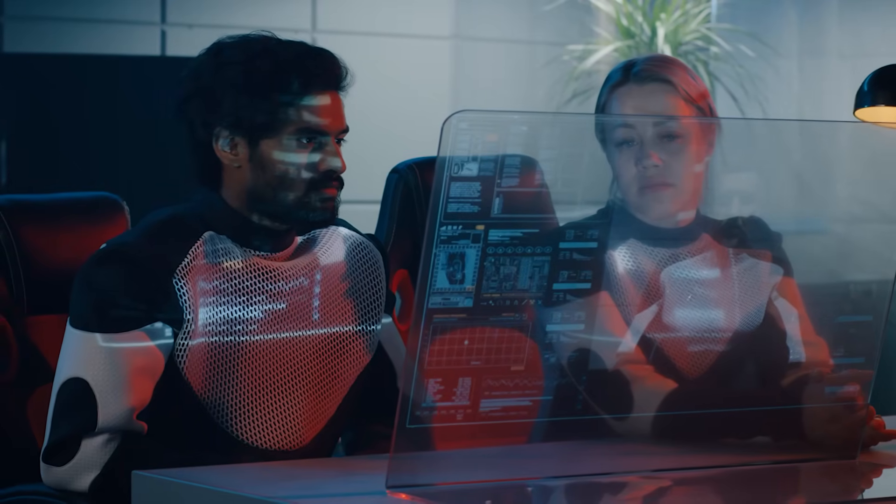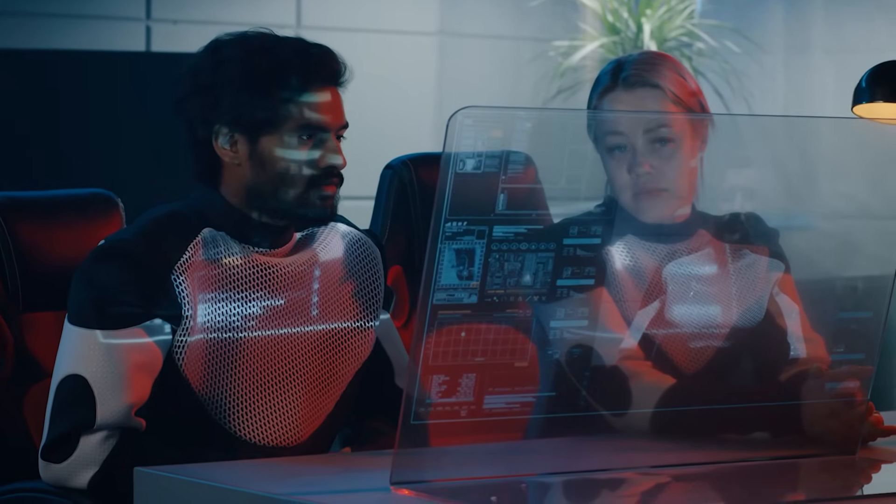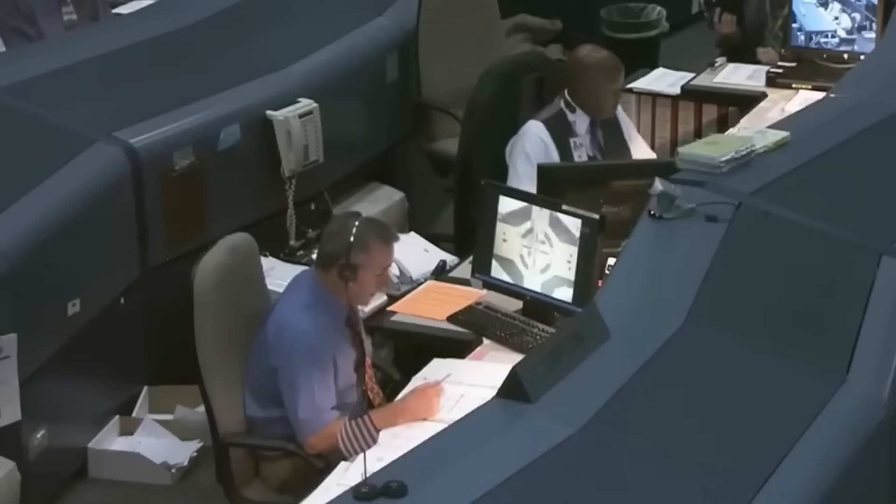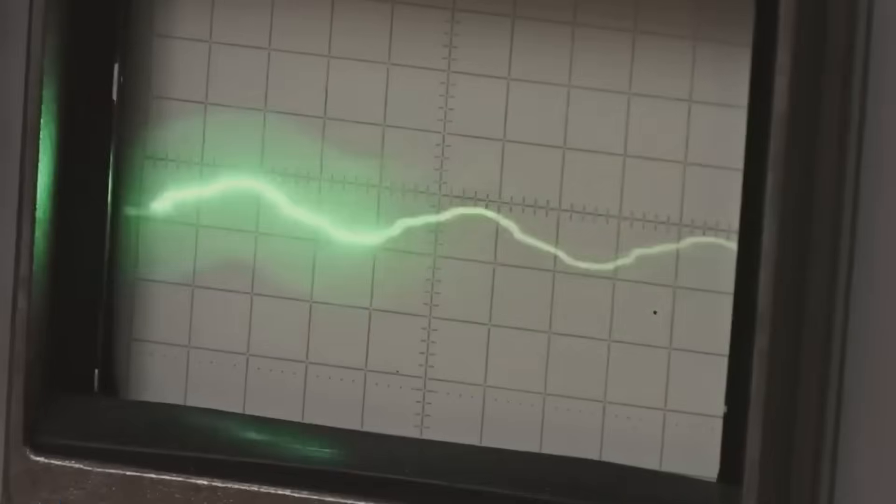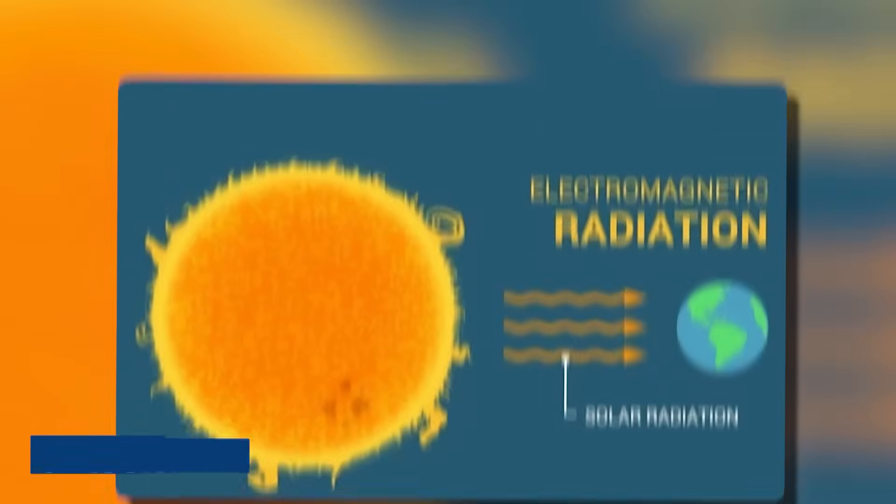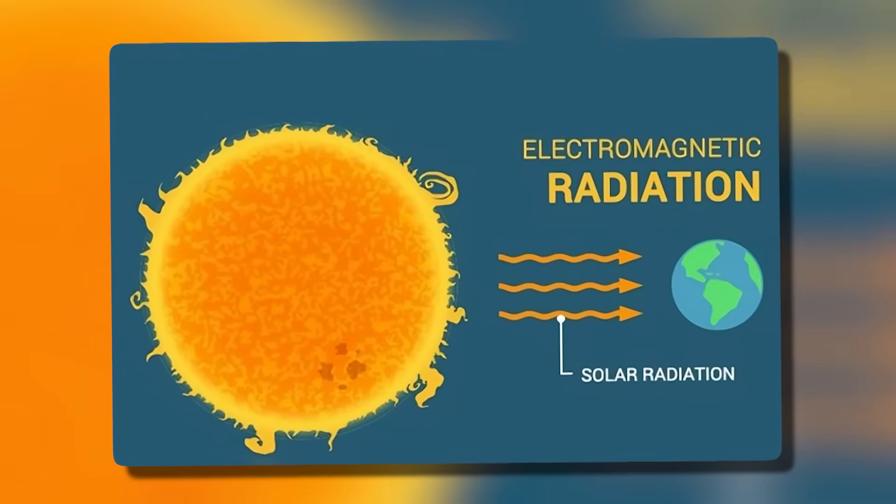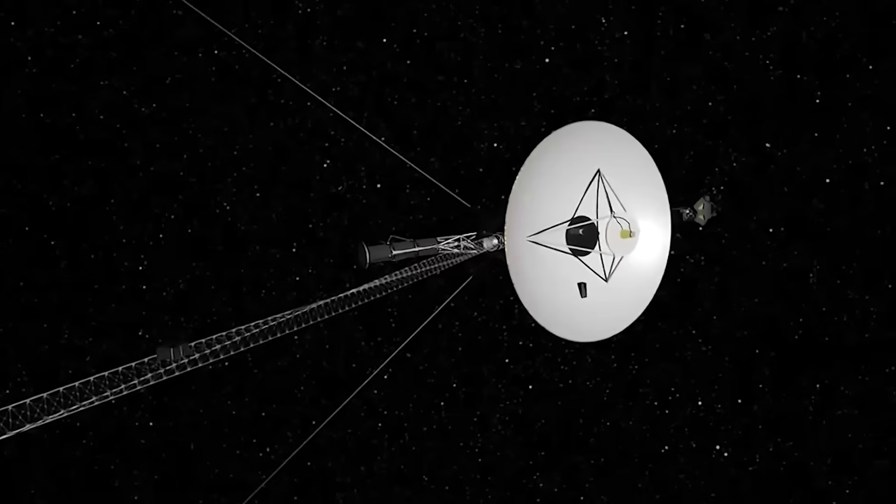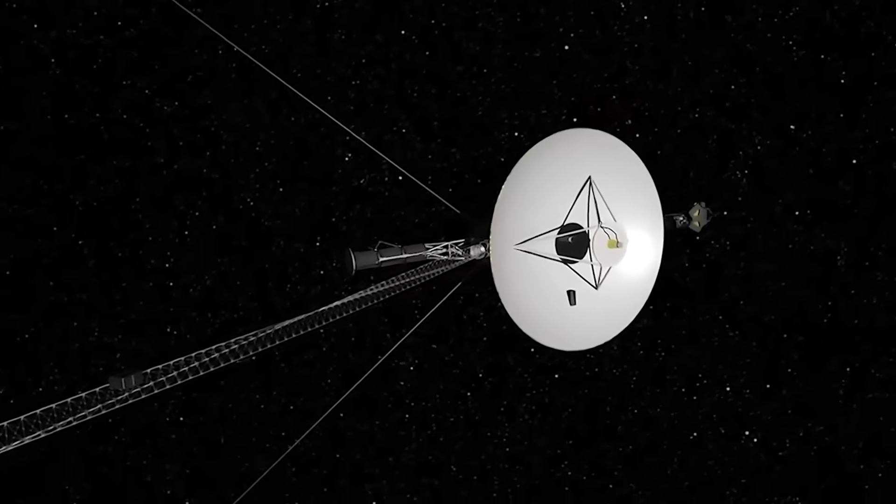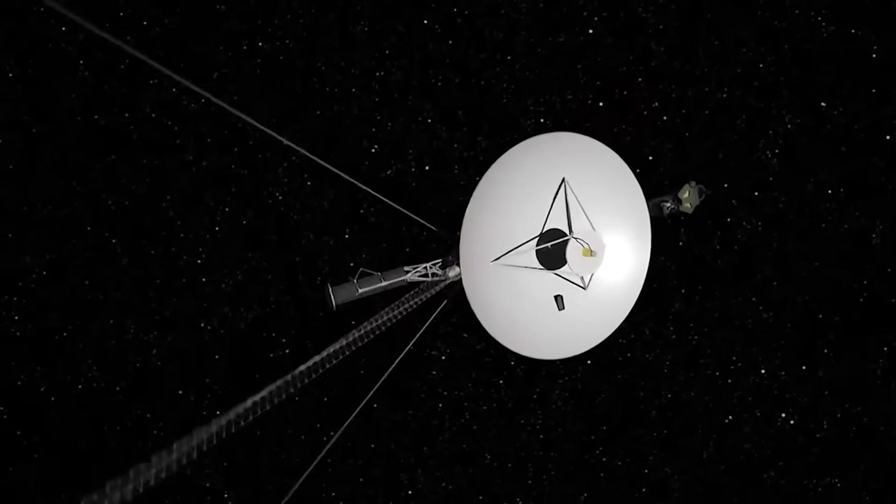The team at the Jet Propulsion Laboratory scrambled to decode the signal. At first, theories bounced around wildly. Was it a glitch in the memory subsystem? A misfiring of ancient circuitry? Had solar radiation somehow reconfigured part of its onboard software? None of these explanations held up. The message repeated over and over, transmitted in a loop over the course of several hours. There was a consistency to it that seemed impossible given the probe's age and fragility.